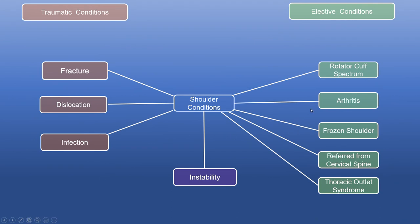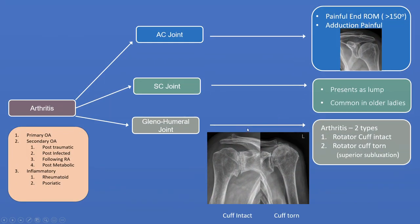One of the other important diagnoses in the shoulder is arthritis — degeneration or inflammation of a joint — affecting the three main joints. The AC joint occurs with pain at end range of motion as someone lifts their arm, secondary to impingement of the end of the collarbone hitting the acromion, or pain on adduction for the same reason. They often present with a lump at that site; it can occur in younger age groups secondary to heavy weightlifting or traumatic sports, and can be easily treated with either steroid injection or excision of the end of the clavicle.